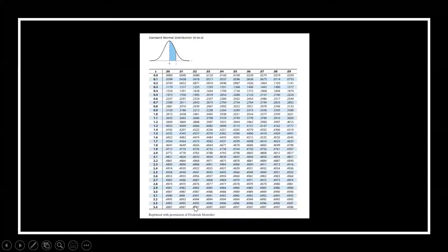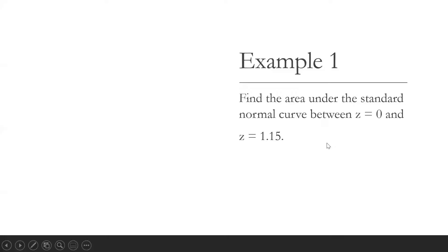To find the area, we will be using the standard normal distribution table. Let's have example number one: find the area under the standard normal curve between z equal to 0 and z equals 1.15.